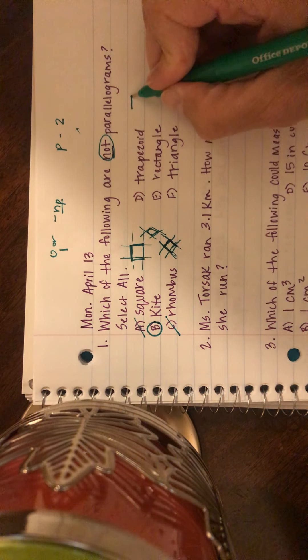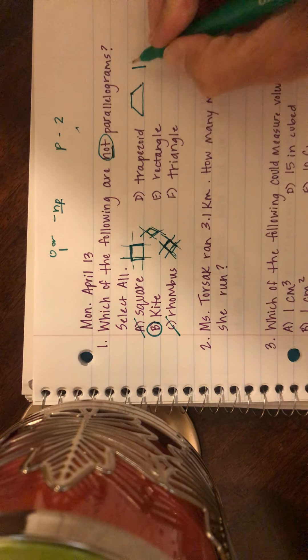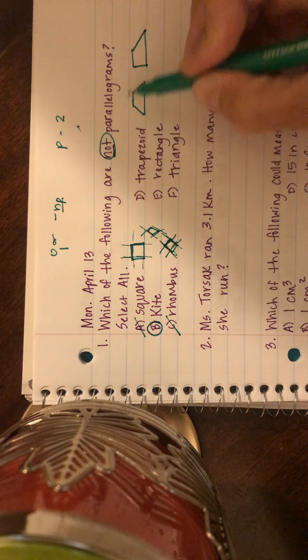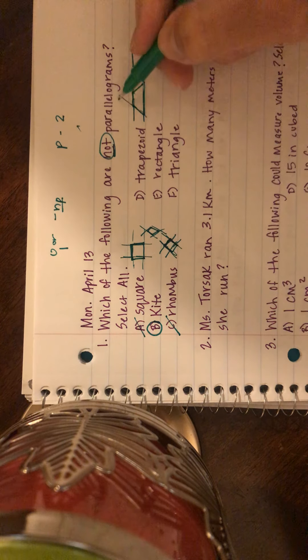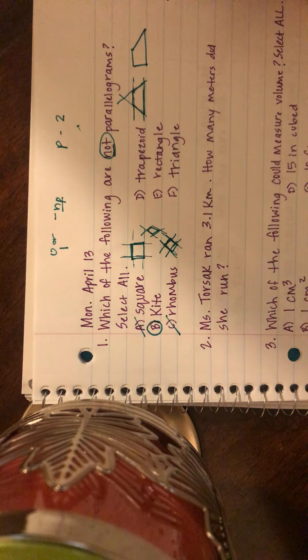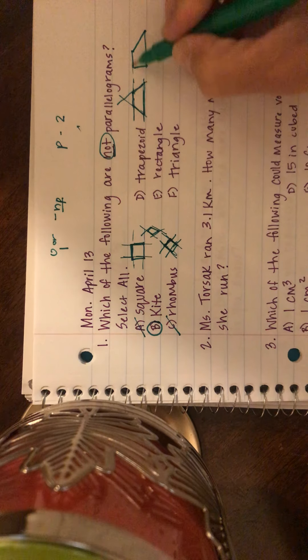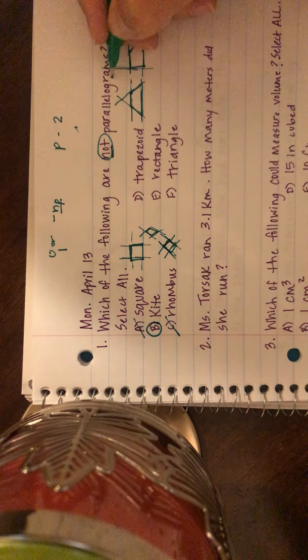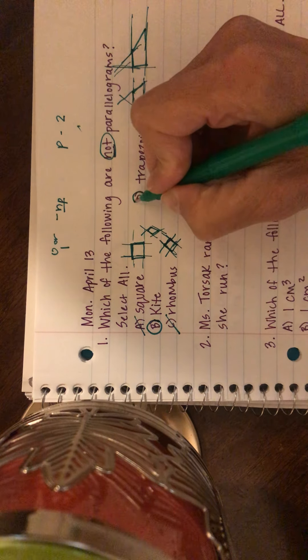When I do a trapezoid, I can draw trapezoids a couple of different ways. There's an example, there's an example. And when I extend those lines out, there's one set, but if I extend these out they're going to eventually intersect. So that cannot be a parallelogram. And same here with this one, if I extend these lines out they will never cross, but again if I extend these out eventually they're going to intersect. So a trapezoid is not a parallelogram.